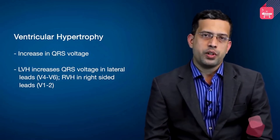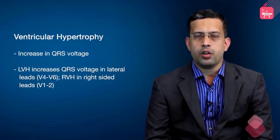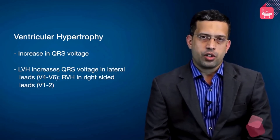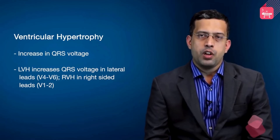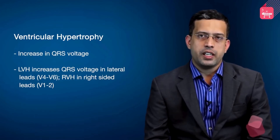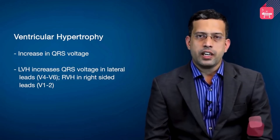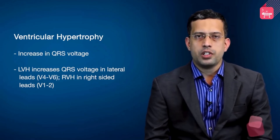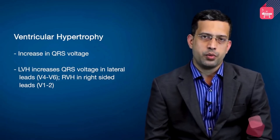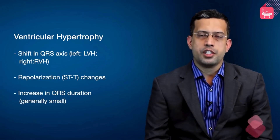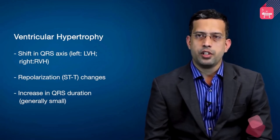Which leads would show an increase in QRS voltage depends on which chamber is enlarged or hypertrophied. LVH or left ventricular hypertrophy would more likely cause an increase in QRS voltage in the positive direction in the lateral leads, namely V4 to V6. Whereas right ventricular hypertrophy or RVH would lead to an increase in positive deflection dominance in the right-sided leads, namely V1 to V2. The second thing ventricular hypertrophy often does is cause a shift in the frontal plane QRS axis.